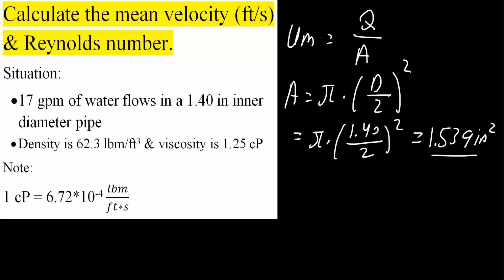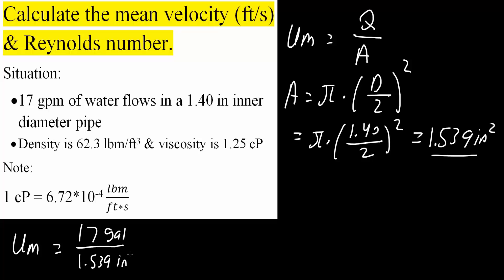Now we will calculate the mean velocity. The volumetric flow rate Q is given as 17 gallons per minute, and the area A is 1.539 inches squared. So we have 17 gallons per minute divided by 1.539 inches squared. From here, we will do some unit conversions: 1 minute equals 60 seconds.